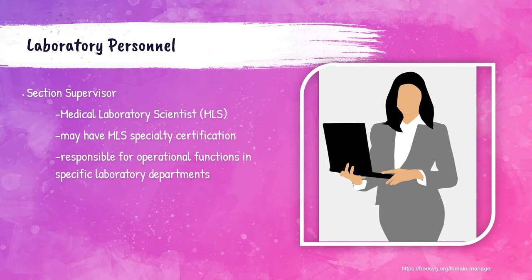A section supervisor will have a medical laboratory scientist (MLS) degree, possibly a specialty certification for that department, or many years of experience. They are accountable to the laboratory manager and are responsible for operational functions in their department — for example, a clinical chemistry section supervisor or a hematology section supervisor.